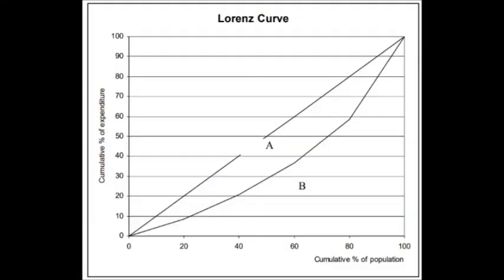The most popular measure of income inequality is the Gini coefficient, which is derived from the Lorenz curve. The Lorenz curve shows the percentage of total income earned by the cumulative percentage of the population. The diagonal line represents perfect equality for a perfectly equal society, but in reality that's not the case — as inequality increases, the Lorenz curve deviates from the line of equality. This is shown in the figure with two areas A and B. If A equals 0, the Gini coefficient becomes 0, meaning perfect equality. If B becomes 0, the coefficient becomes 1, meaning complete inequality.